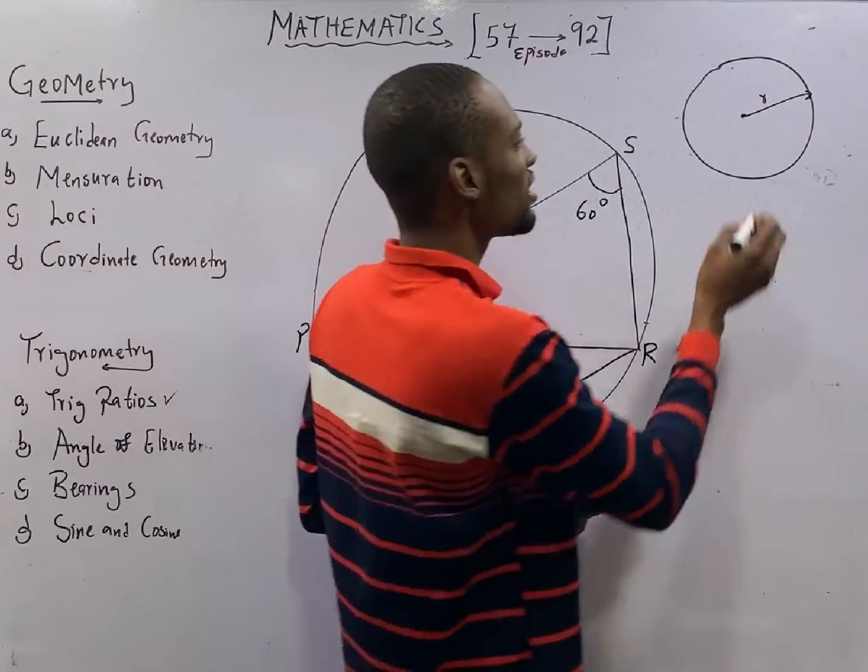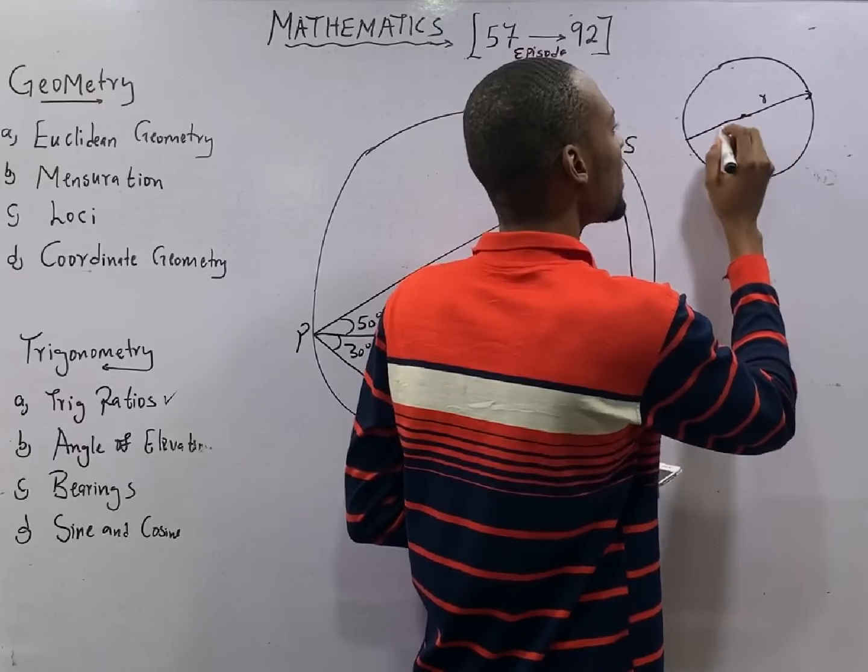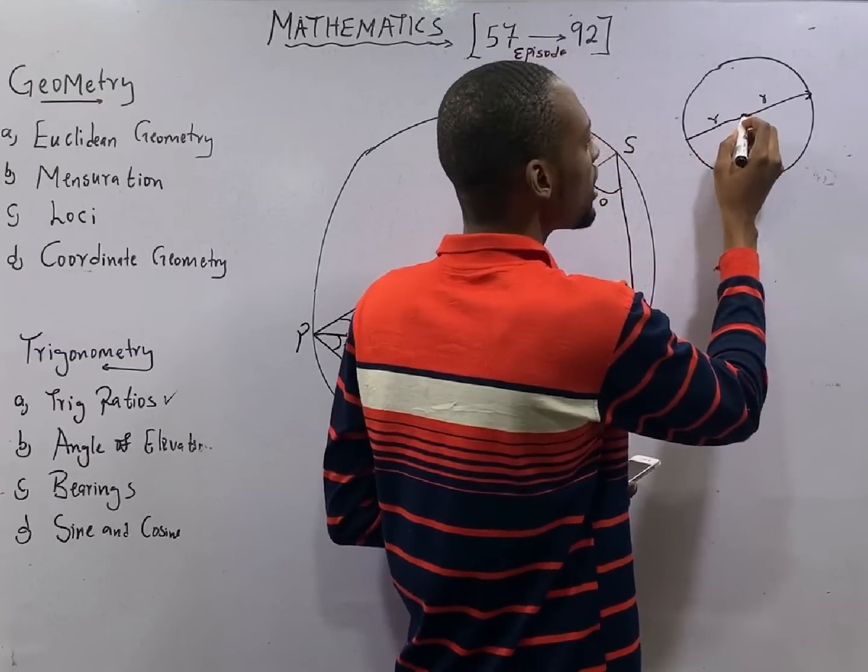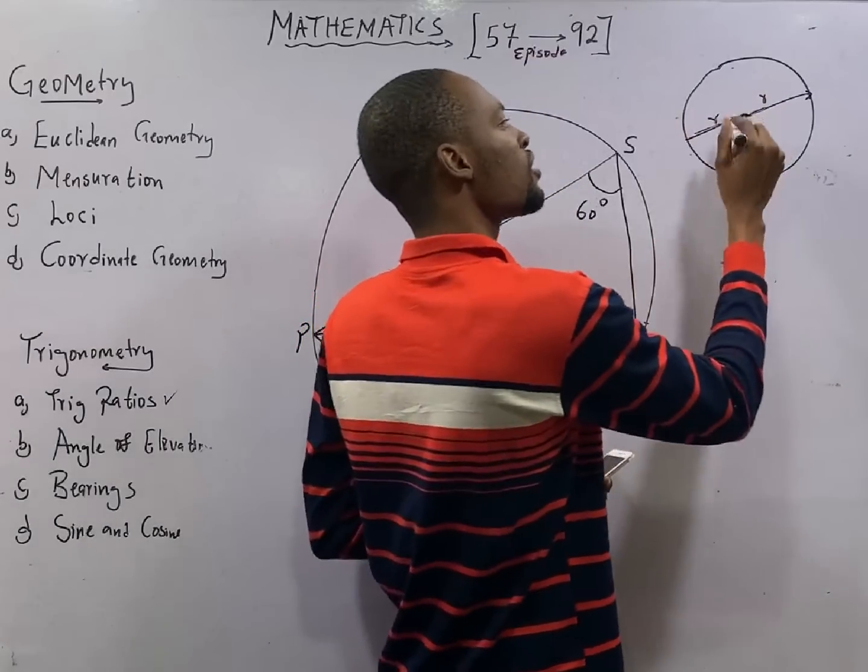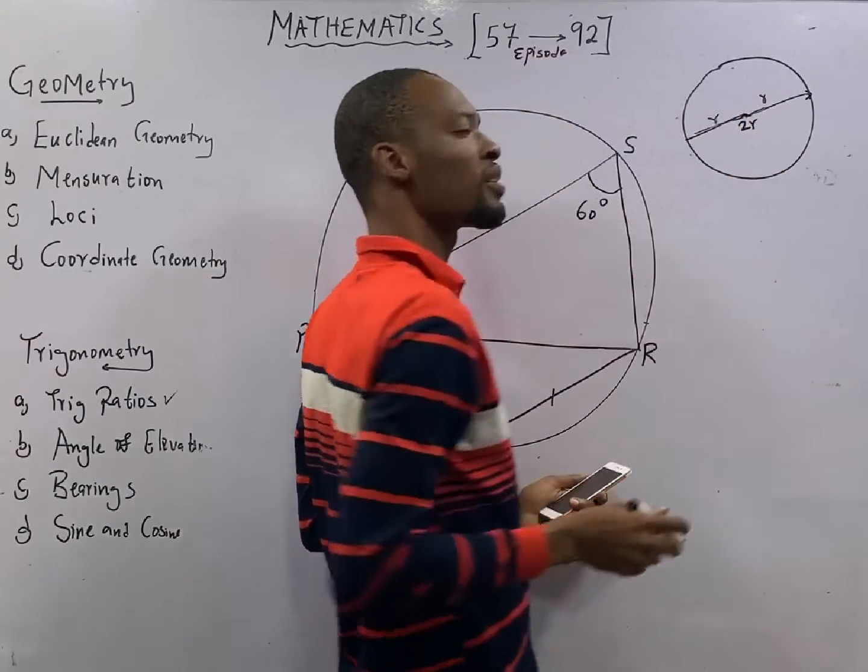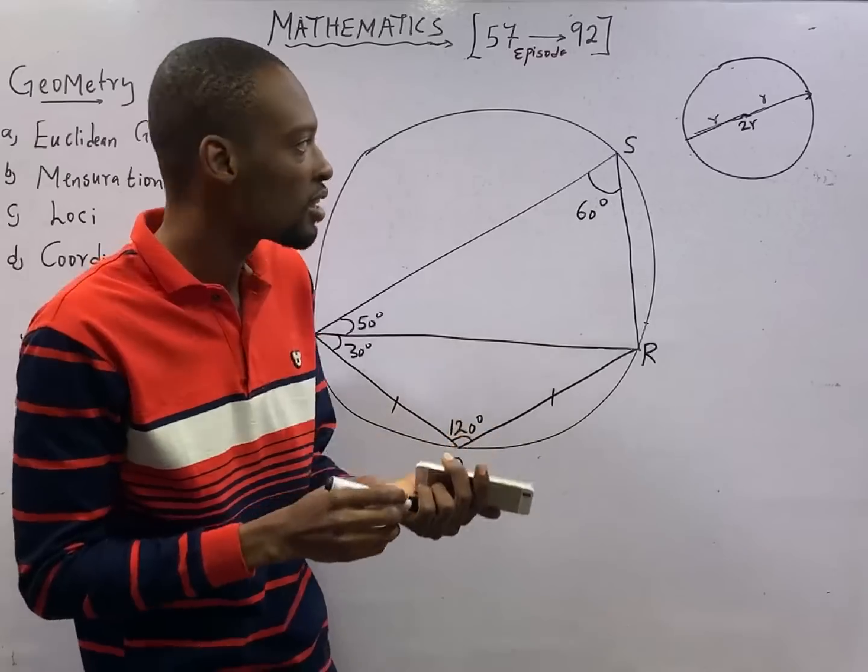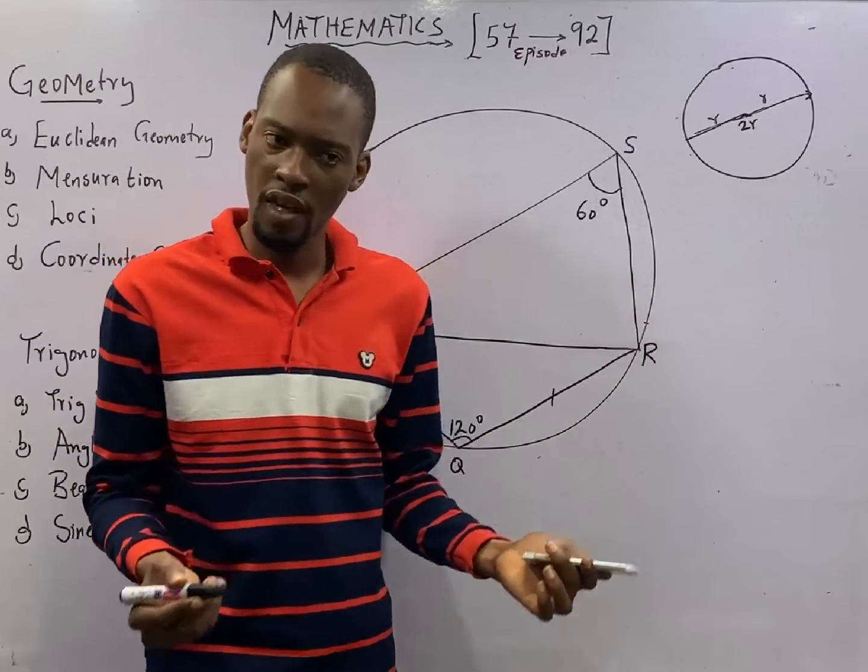Now, if you have a line straight cutting the center like this, from here to here is one radius, from here to here is another radius. This is equal to two radius and two radius is equal to diameter. So, from here to here is diameter.